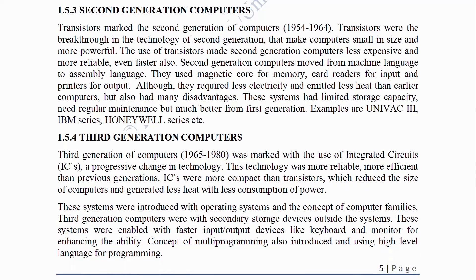Transistors marked the 2nd generation of computers (1954–1964). Transistors were a breakthrough technology that made computers smaller and more powerful. The use of transistors made 2nd generation computers less expensive, more reliable, and faster. They moved from machine language to assembly language and used magnetic cores for memory, card readers for input, and printers for output. Although they required less electricity and emitted less heat than earlier computers, these systems still had limited storage capacity and needed regular maintenance.